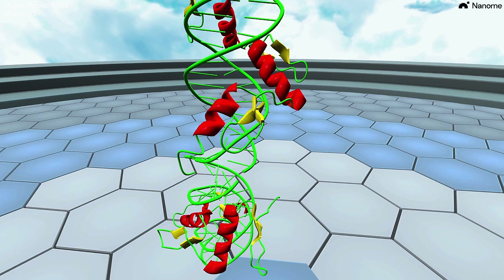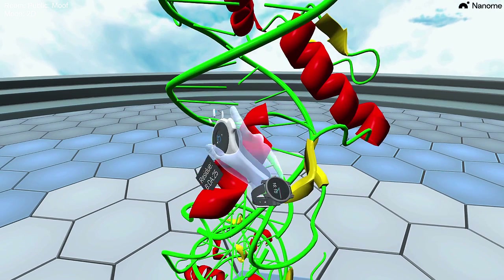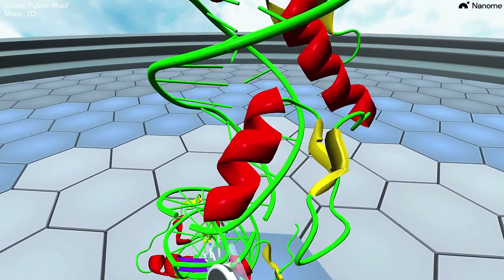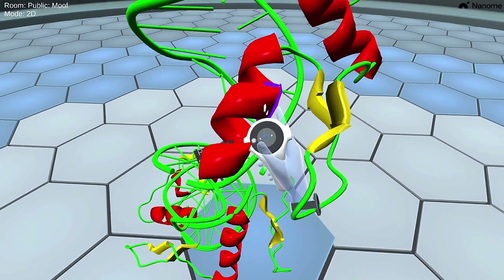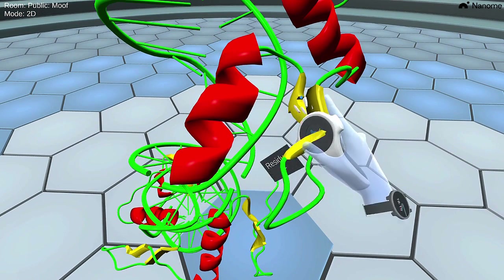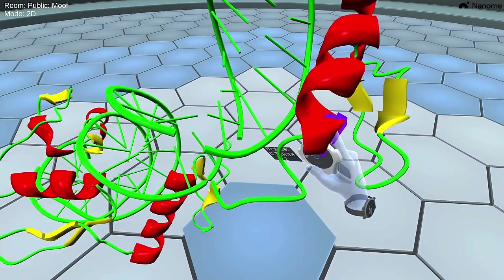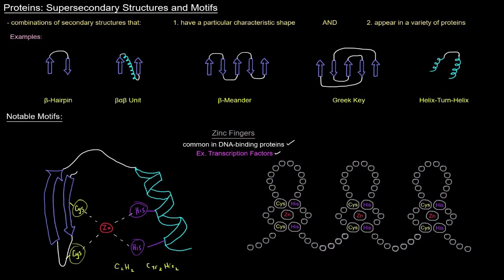Here's a visual of what a zinc finger looks like on a DNA strand. The actual DNA strand is in the back, and here we have the helix and two beta sheets that make up the zinc finger, associated with the DNA double helix. This motif comes up often in DNA-binding proteins. You can call it a motif or a super-secondary structure — I tend to use the terms interchangeably, though not everyone does.